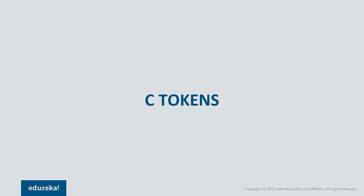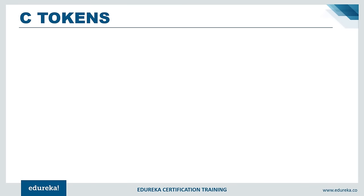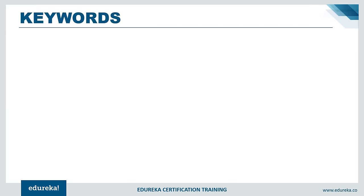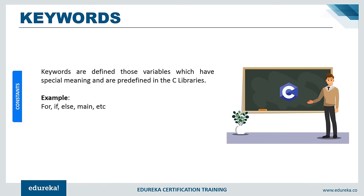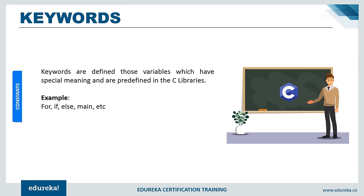Now we shall discuss C tokens. The C tokens available in C programming language are keywords, constants, special symbols, strings, identifiers, and operators. We shall discuss each one of them in detail. Keywords are defined as variables which have special meaning and are predefined in C libraries.